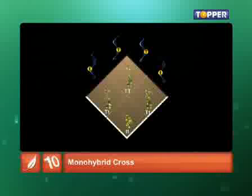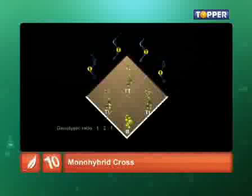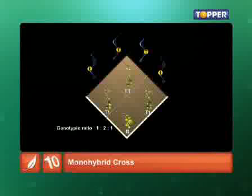This concluded that the genotypic ratio was worked out to be 1 is to 2 is to 1 (capital T capital T : capital T small t : small t small t).